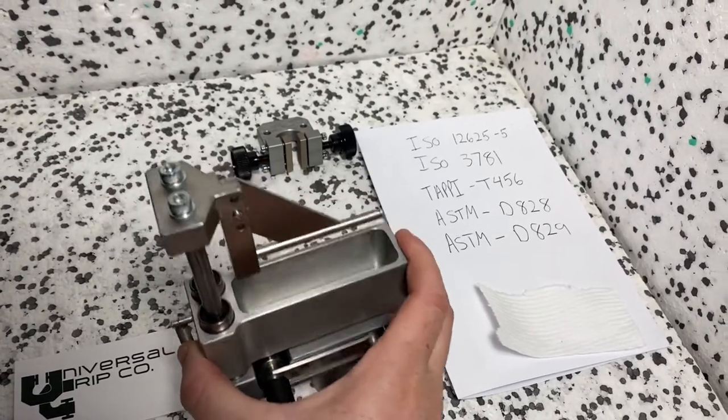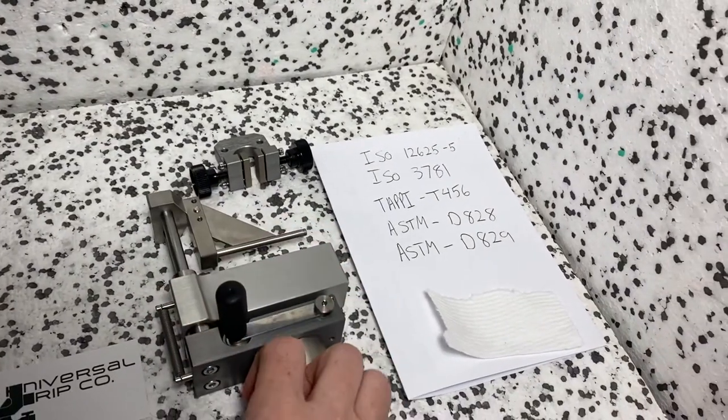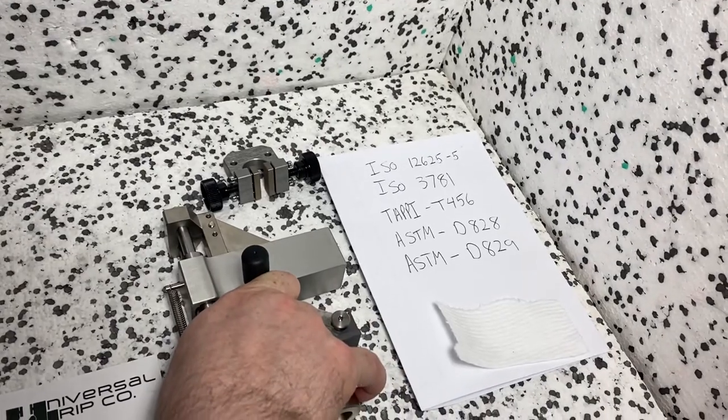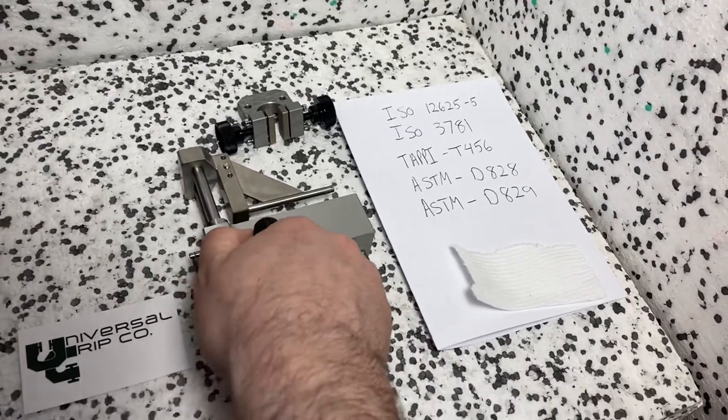You would fill this little basin up with some water and then there's a handle and a spring here which moves it up and basically will wet your sample.